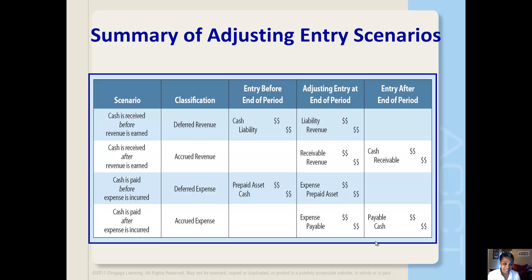Adjusting journal entry generalizations include: first, the purpose of adjusting entries is to record revenues that have been earned but not recorded and expenses that have been incurred but not recorded. Second, every adjusting journal entry will affect at least one revenue or one expense account, and every adjusting journal entry will affect at least one asset or liability account. This means every adjusting entry affects at least one income statement account and one balance sheet account. Third, adjusting journal entries arise because the timing of revenue and expense recognition differs from the exchange of cash. Therefore, cash will never be increased or decreased in an adjusting entry.